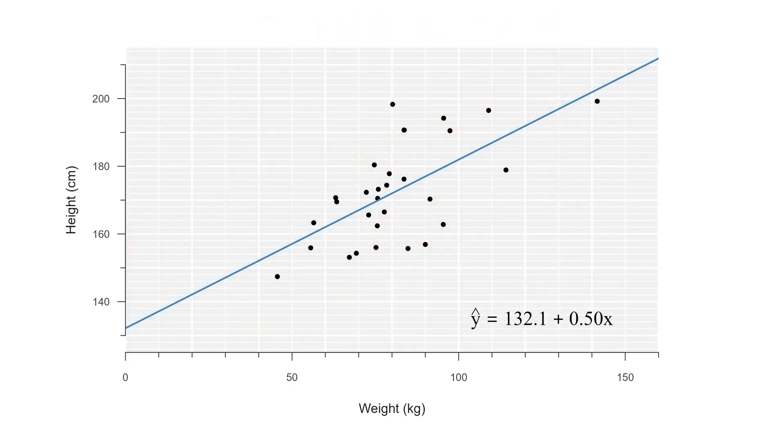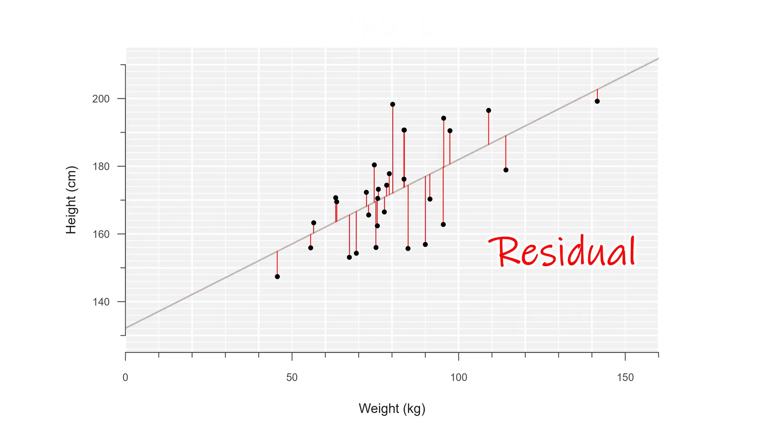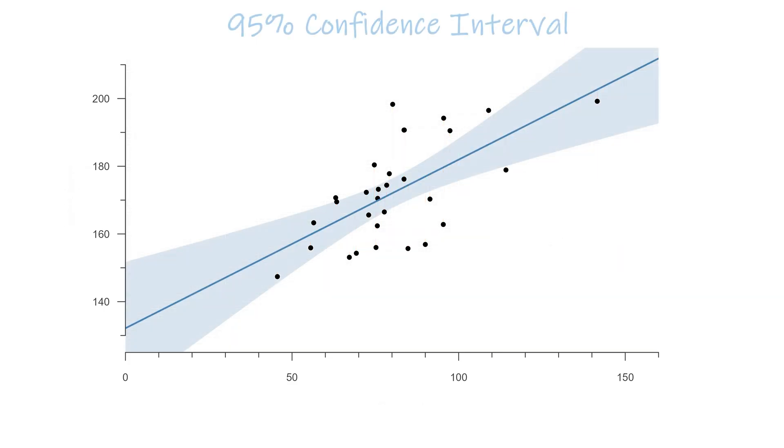To summarize, a simple linear model estimates an intercept and a slope based on the residuals. We can express the uncertainty of these estimates with a confidence interval, and we can predict new observations with a prediction interval.